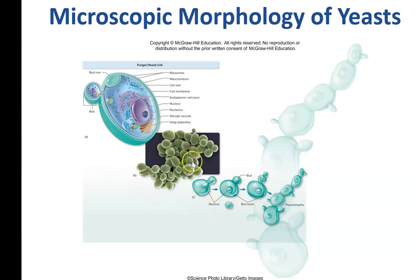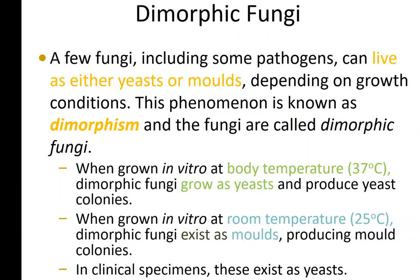Yeast are typically unicellular and they bud. When the buds go off, they become more than one. Sometimes they join together to form a chain, and they have something called pseudohyphae. Pseudohyphae are not technically yeast-shaped.